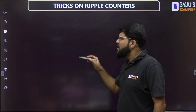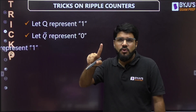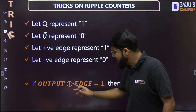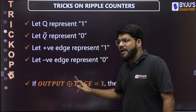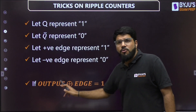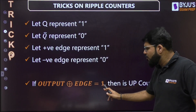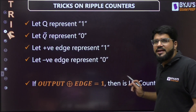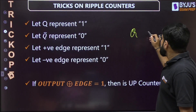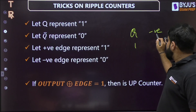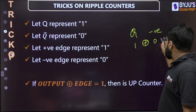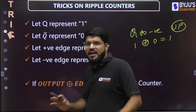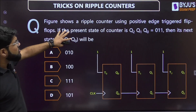One more trick: let Q equal 1, Q-bar equal 0, positive edge equal 1, and negative edge equal 0. Now take the XOR of the output type and the edge type. If the XOR output is 1 — meaning both inputs are different — it is an up counter. For example, Q to negative edge: Q is 1, negative edge is 0, and 1 XOR 0 equals 1 — which confirms up counter.